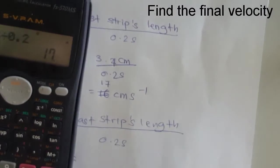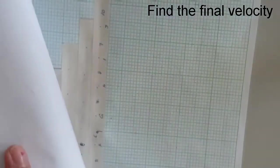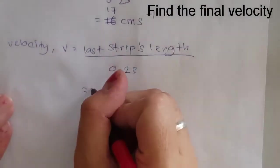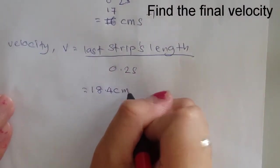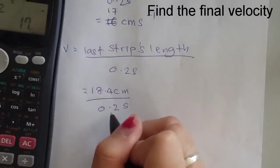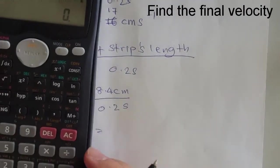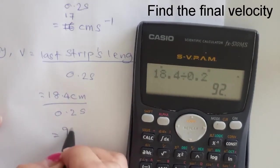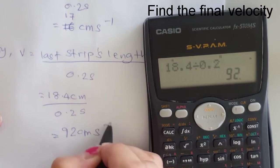Last strip length is 18.4. So 18.4 cm divided by 0.2 second. So 18.4 divided by 0.2, that's 92 cm per second.